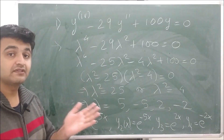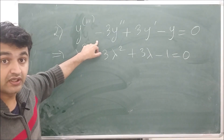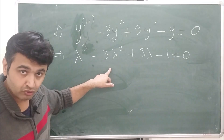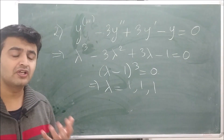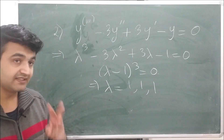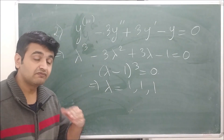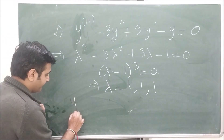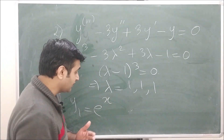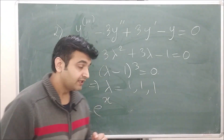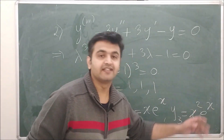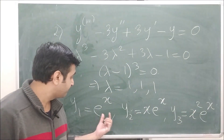Now let's go to the second case when the roots are repeated. This is a third order linear homogeneous differential equation whose corresponding auxiliary equation factors as (λ − 1)³ = 0, so the roots are 1, 1, 1. The algebraic multiplicity of 1 is 3. Now the three linearly independent solutions are: y₁ = e^x, y₂ = xe^x, and y₃ = x²e^x. When roots are repeated, you simply multiply by increasing powers of x.